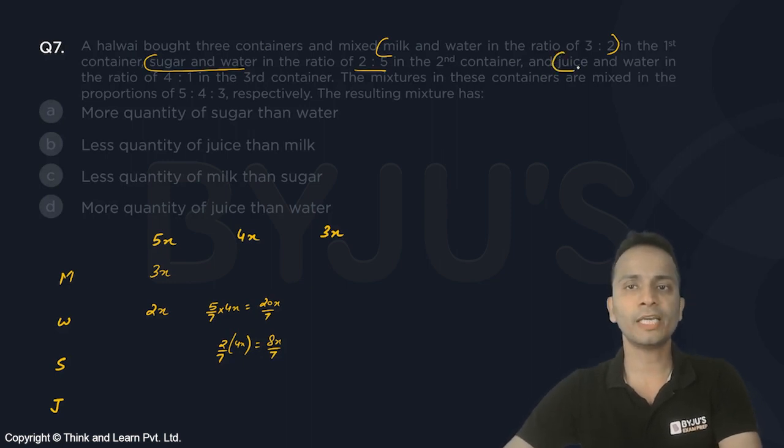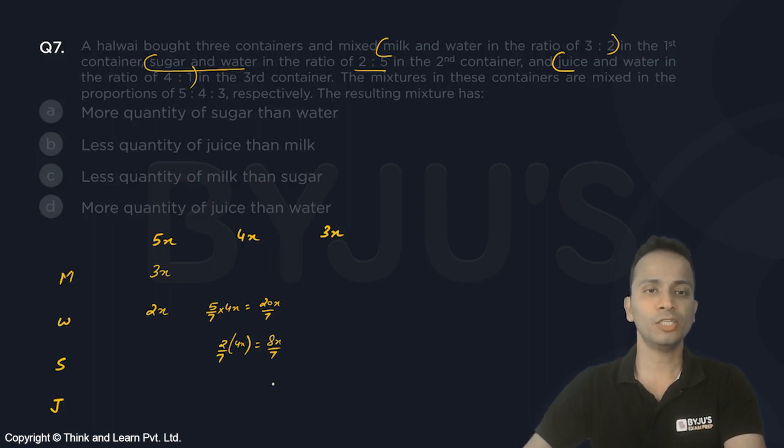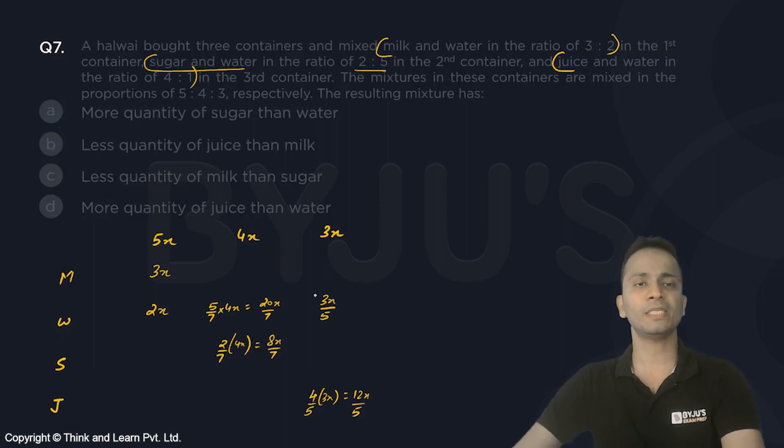The third container has juice and water in the ratio 4 is to 1. Four parts of juice, so 4 by 5 of 3x, that is 12x upon 5 is juice, and water will be one part, so 1 by 5 of 3x, which is 3x upon 5.